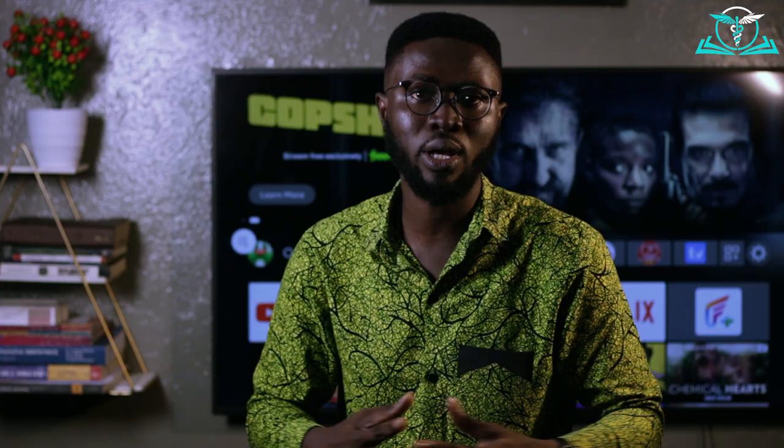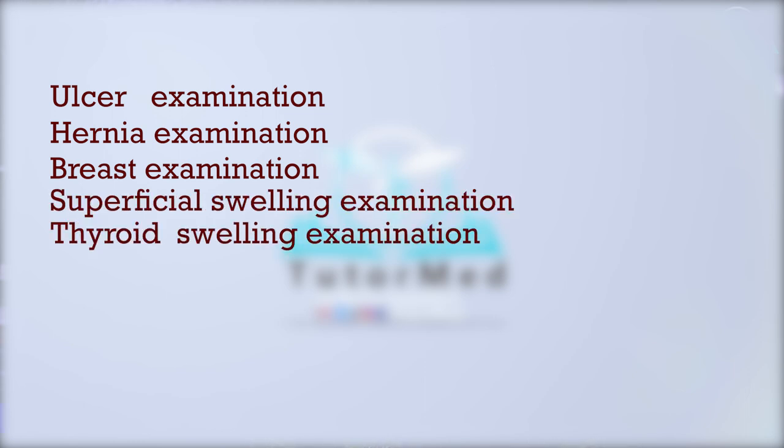For surgery, there are traditionally five short cases in the physical examination station: you may be asked to examine a breast lump, examine a hernia, examine an anterior neck swelling or thyroid goiter, examine an ulcer, or examine a superficial swelling. So the traditional surgery stations are: breast examination, hernia examination, superficial swelling examination, and thyroid swelling examination.